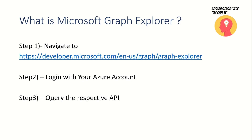Then you have to sign in with your Azure AD account, because Microsoft Graph API is an API that is protected by Azure AD. Then you can use a specific query to get information related to any kind of object that you want to query. Let's proceed by seeing how exactly we can use the Microsoft Graph Explorer tool. I'm going to switch to my browser where I will be signing in with my global admin credentials.